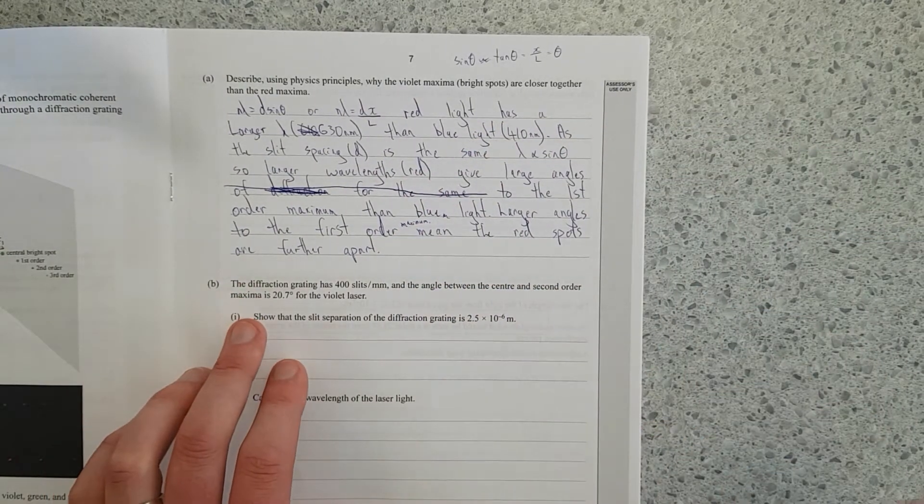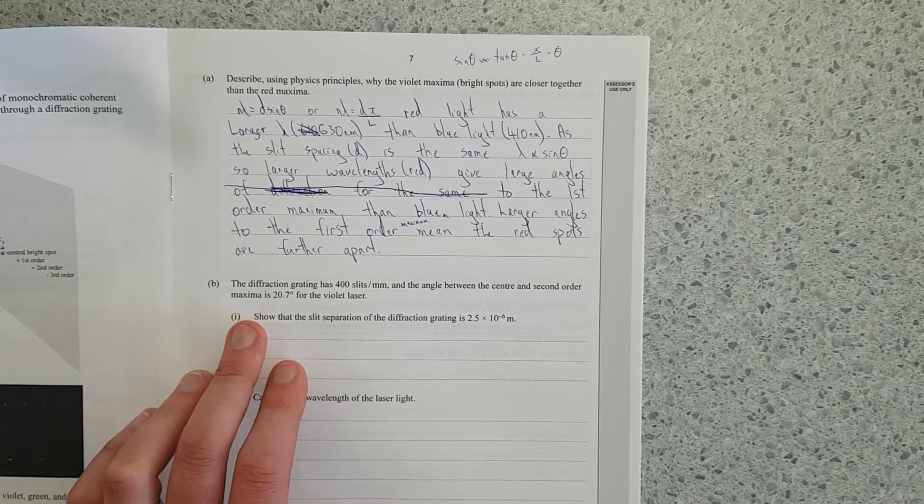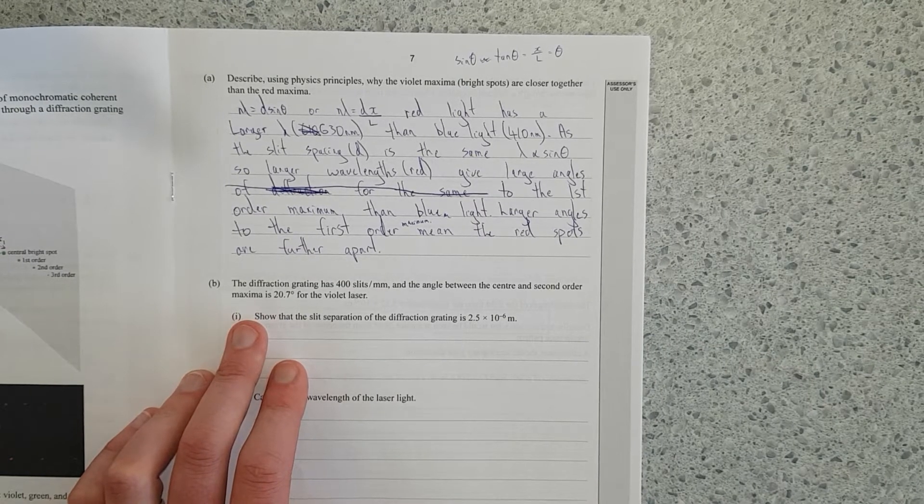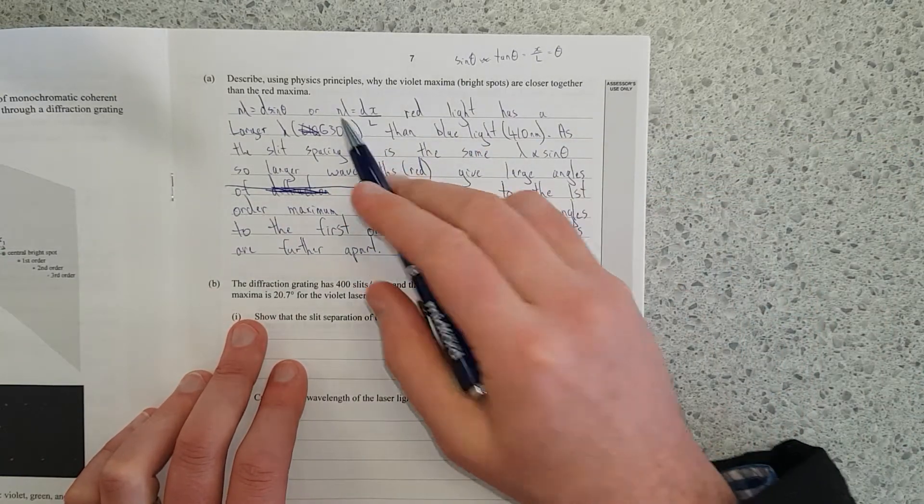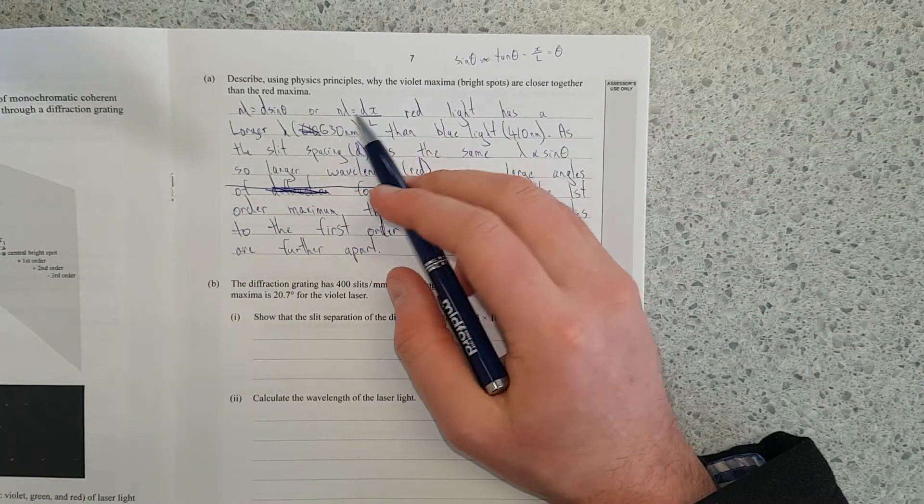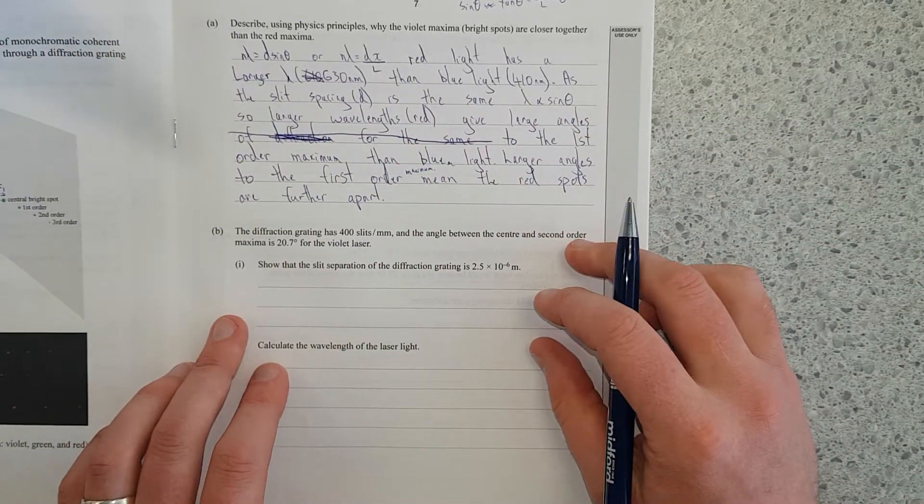Larger angles to the first order mean the red spots are further apart and they should be maximum. I should have talked about path difference as well, but I mean it's only a three point question. You could talk about how n lambda is essentially the path difference. Larger path difference means larger angles.